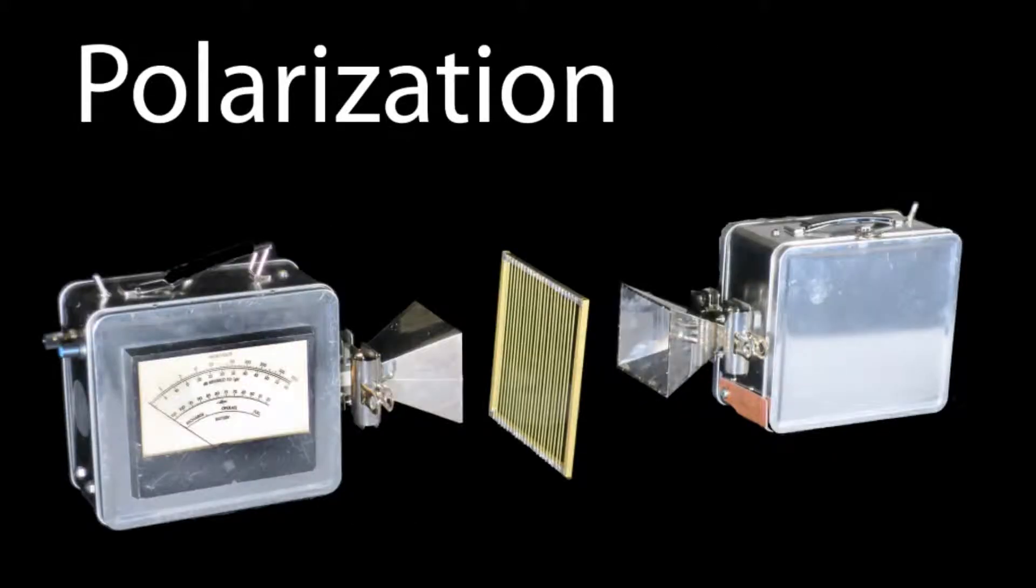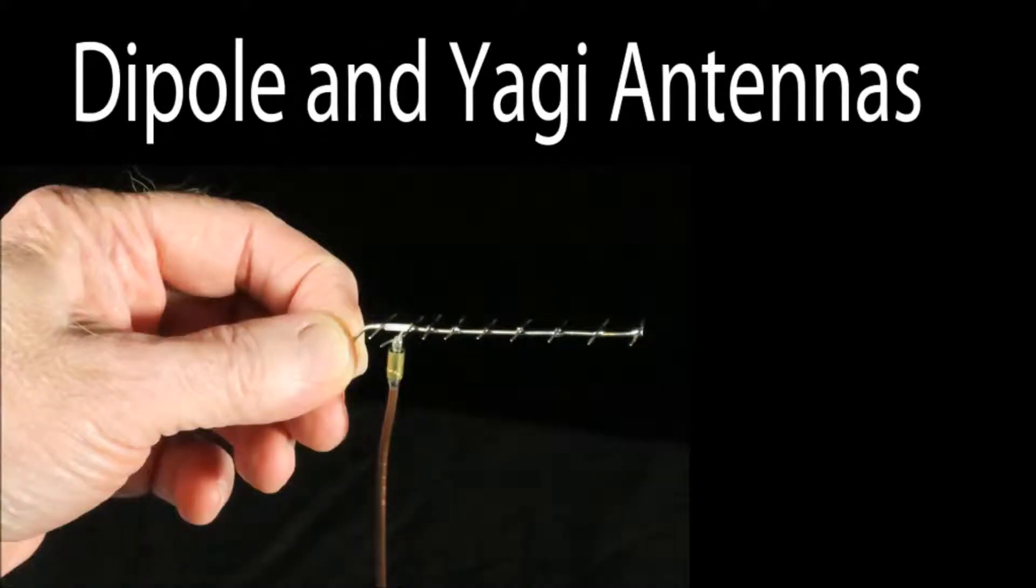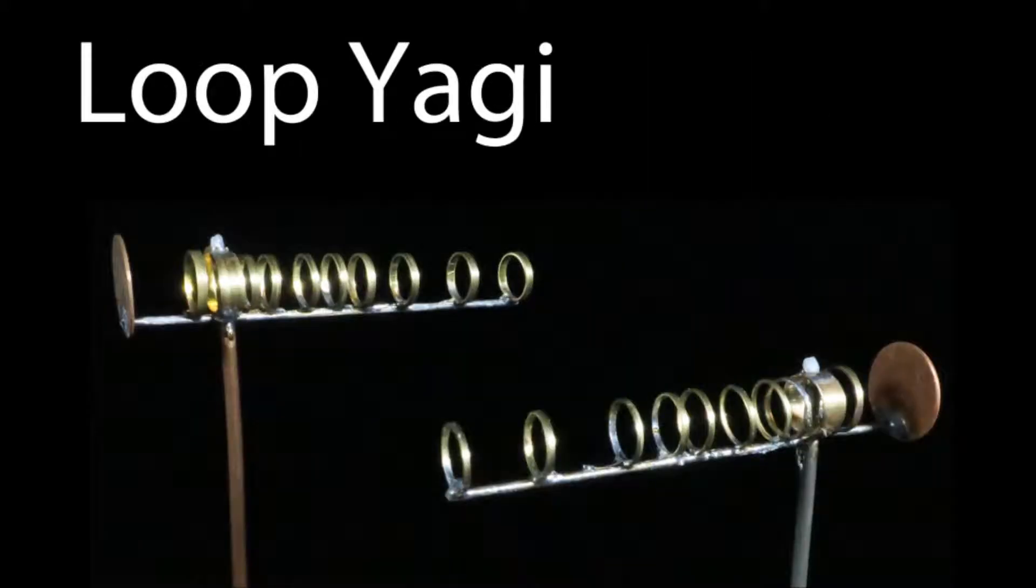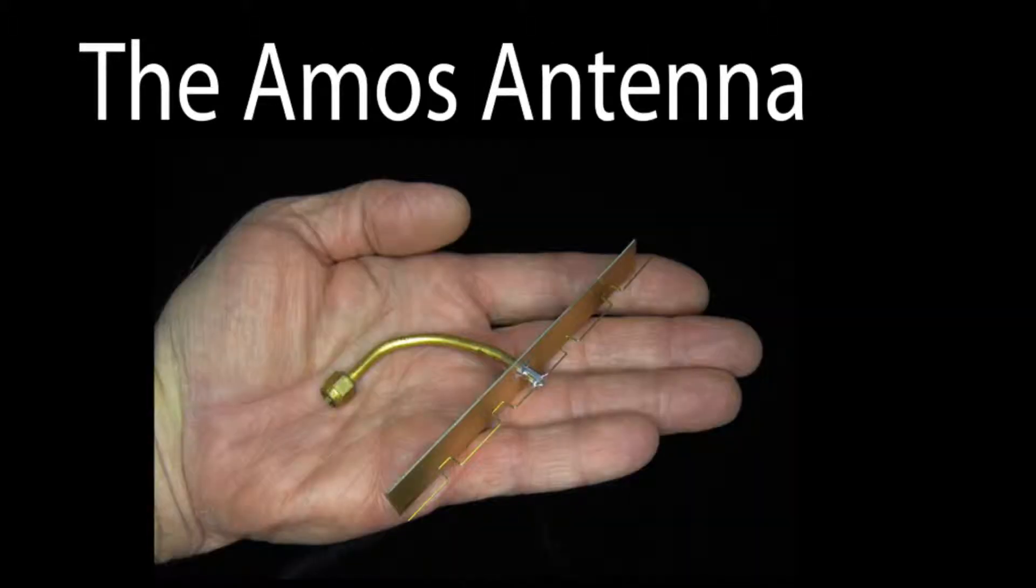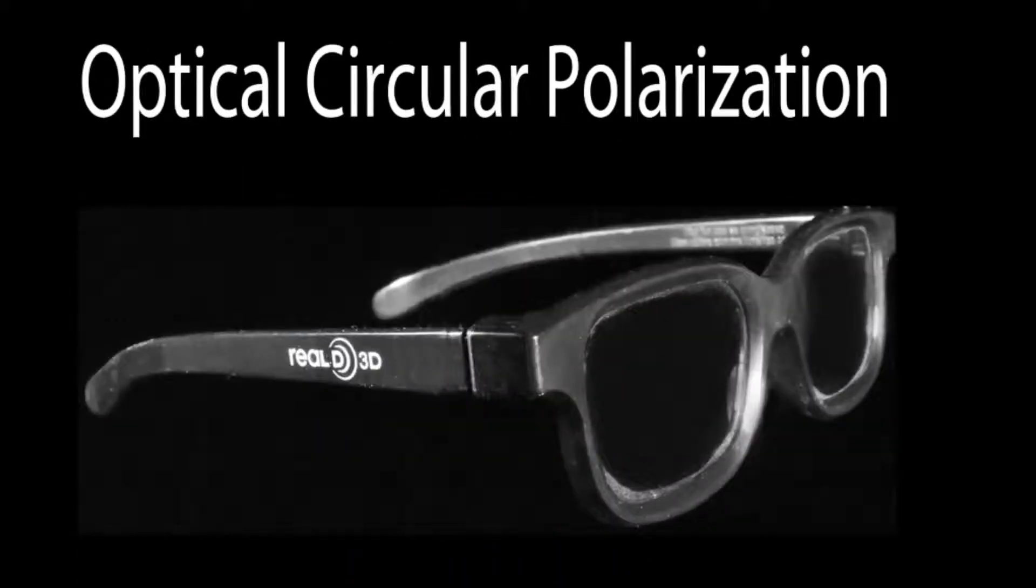Polarization, the ground plane antenna, dipole and Yagi antennas, the corner reflector, loop Yagis, the Alamos antenna, circular polarization, optical circular polarization.